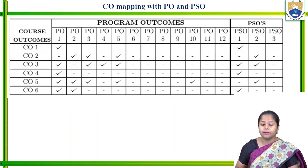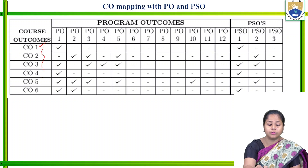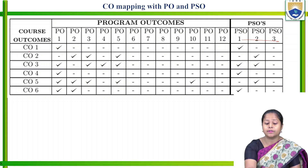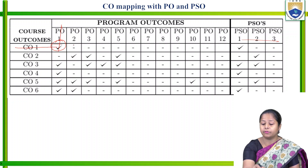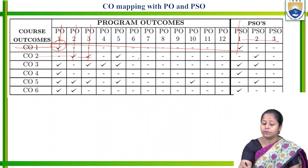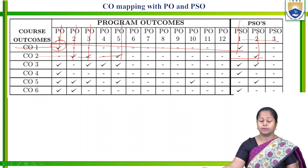This is the CO-PO mapping with POs and PSOs. The six COs will be mapped with the 12 overall POs and three PSOs. For example, CO1 is mapped with PO1 and CO1 is mapped with PSO1. Likewise, the goals will be achieved through mapping with program outcomes.